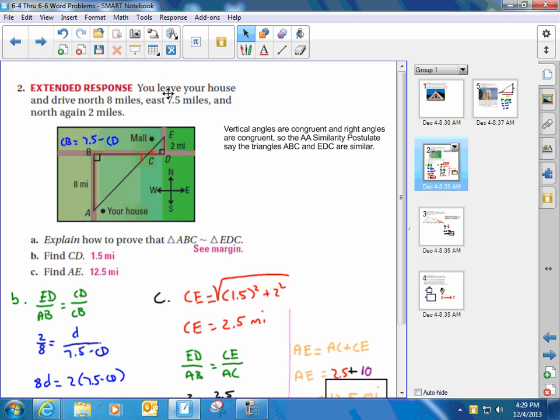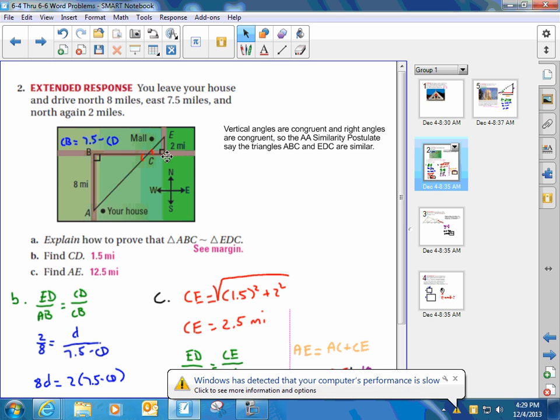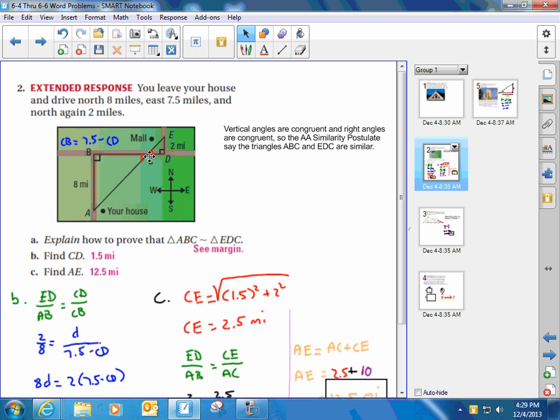In the scenario, you leave your house and drive 8 miles north, then 7.5 miles east, then 2 miles north. So the distance from B to D is 7.5 miles. We're going to use the properties of similar triangles to find the length of segment CD. The only reason we're finding CD is because we want to find AE, and we'll see that in a second.